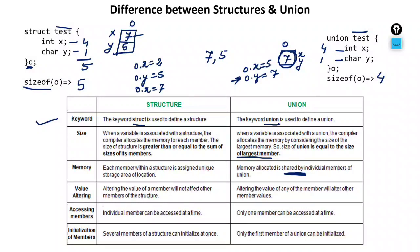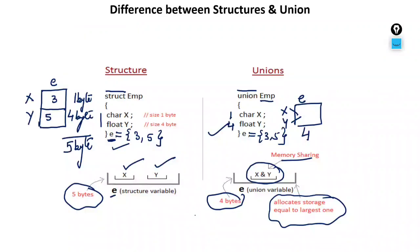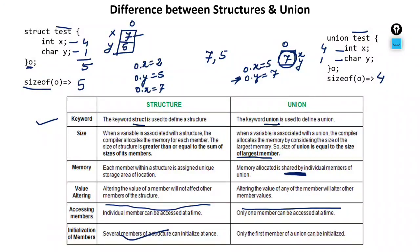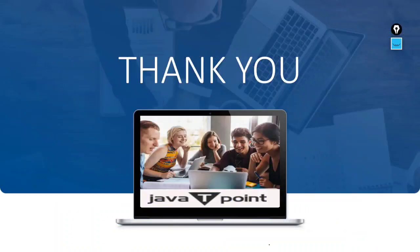Fifth, individual member access: in a union, only one member can be accessed at a time, because they both represent the same memory location. In a structure, any individual member can be accessed at a time. Sixth, initialization: several members of a structure can be initialized at once, but for a union, only the first member can be initialized. Thank you so much for watching Javatpoint — please like, subscribe, and share the channel.